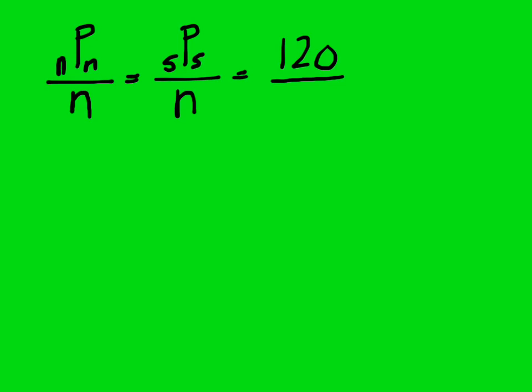So really, the general way of finding this for any value of N is N pick N over N. So in our case, that would be five, how many ways can five people be chosen to sit in a line of five, and then divide it by N. So that would be, just like we had, 120, pick five is 120, divide it by five, which is 24.